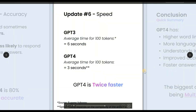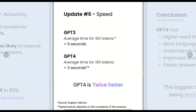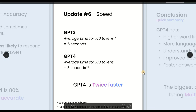And then there's speed. ChatGPT-4 is now about twice as fast as the previous version. For example, ChatGPT-3 had an average response time of around six seconds — now it's down to three seconds.